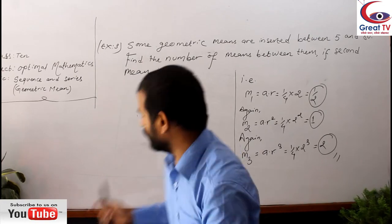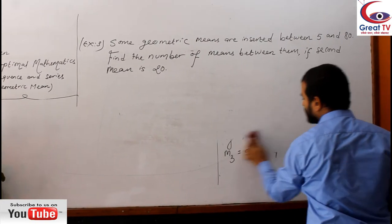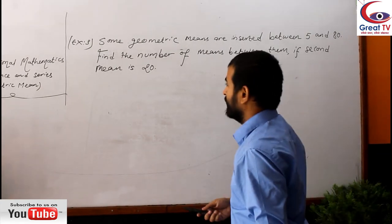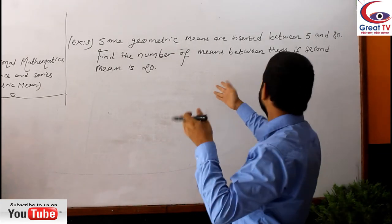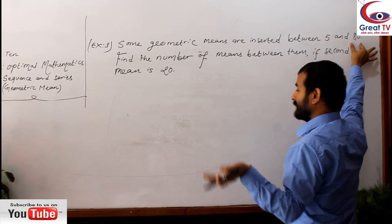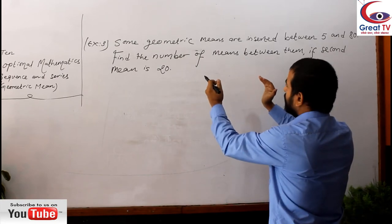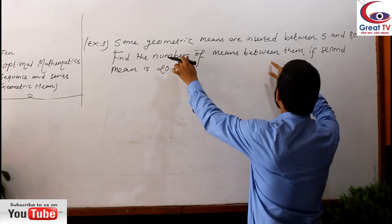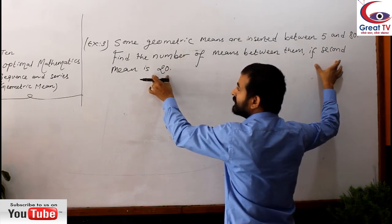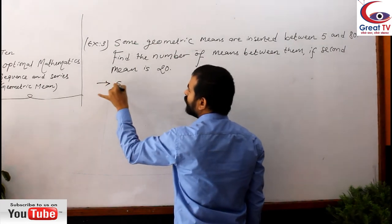So my dear students, if you compare the questions and the previous questions, they both are similar, but there is one slight change between the questions. In the previous questions that I solved, they were first and last term, no doubt, we have also. But there was the number of means were given. Now the number of means are hidden, and we have given our extra choice, that is second mean is 20.